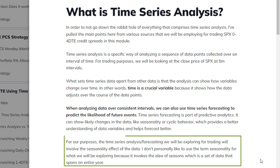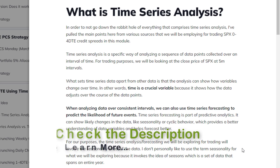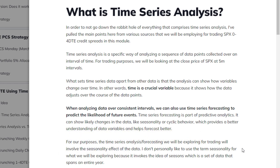That's ultimately what we're trying to do. For our purposes, the time series analysis or forecasting we're going to be exploring for trading will involve the seasonality effect of the data. I personally don't like to use the term 'seasonality' for what we're going to be working on here at alphacrunching.com because it invokes the idea of seasons, which usually span a year or more. We're just going to be looking at five-minute intervals over the last several weeks. To learn more about time series analysis, I'll put a great link in the description on YouTube so you can explore further. This is the quick and dirty version we're going to be using for trading SPX weekly options with zero to four days to expiration. See you in the next video.